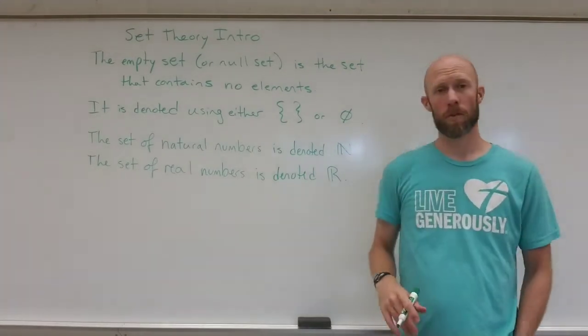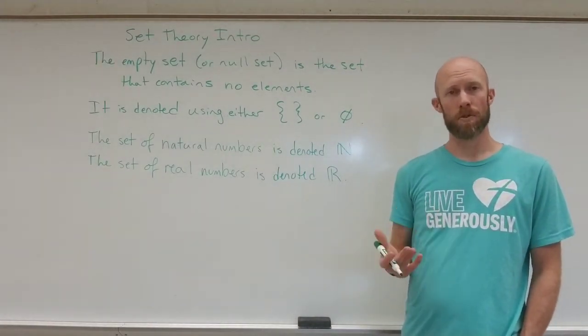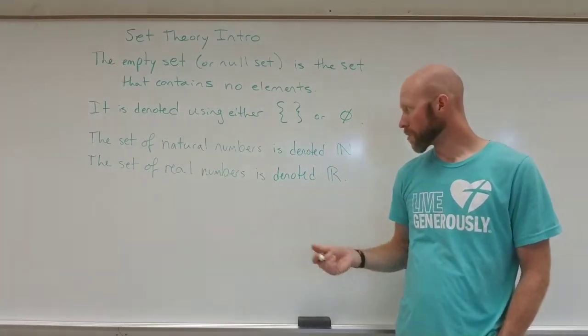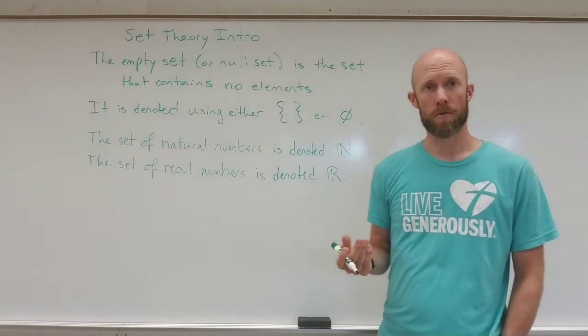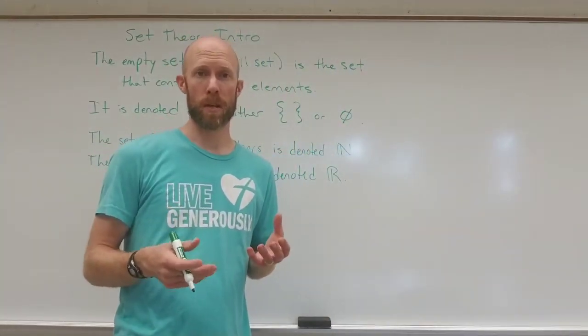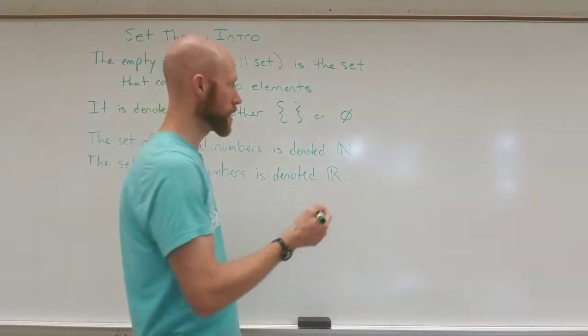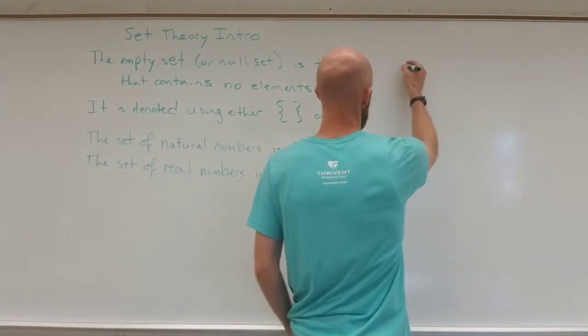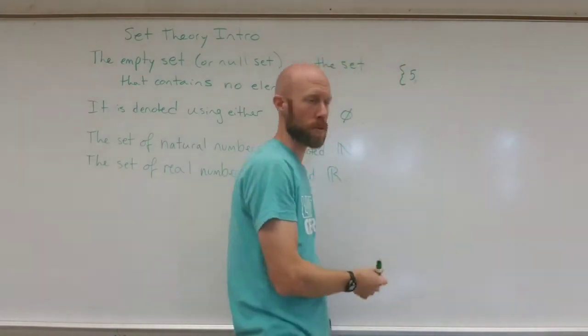Now we can also look at some intervals of numbers and they can be intervals of real numbers, intervals of natural numbers and so forth. So for instance let's say I wanted all the natural numbers between 5 and 15. I could just write them out but it's a lengthy list right.